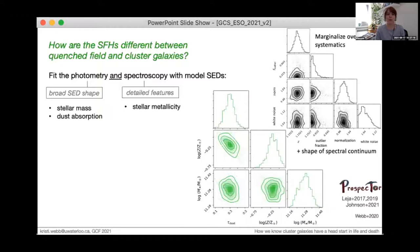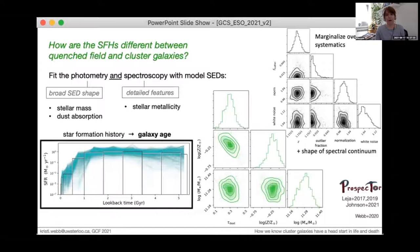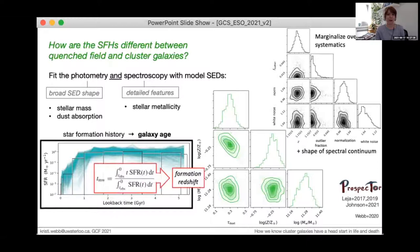Because the spectra provides constraints on the metallicity and age, we need both the broad and detailed information to obtain the star formation history shown here, where we use this non-parametric form, which is basically a step function. It's often useful to summarize the star formation history by integrating to get the mass weighted age, or equivalently just in different units, the formation redshift. This metric tells us the time around which half the stellar mass had formed, where younger ages mean that it took more time for the galaxy to build up its stellar mass.